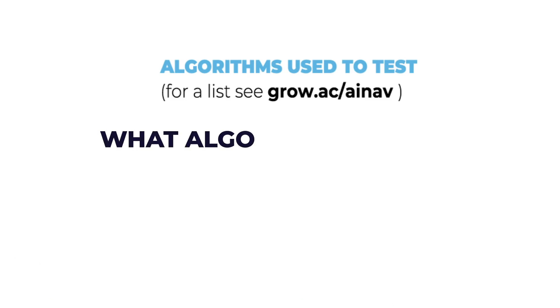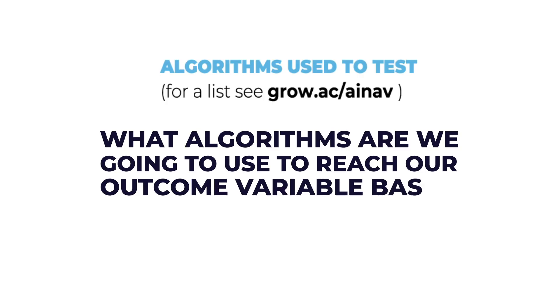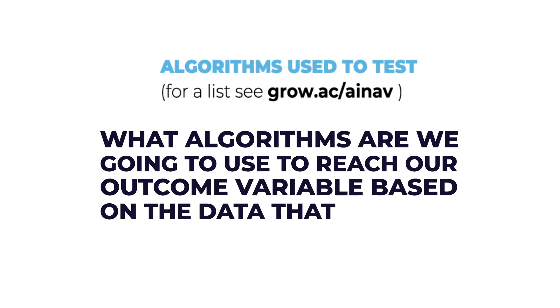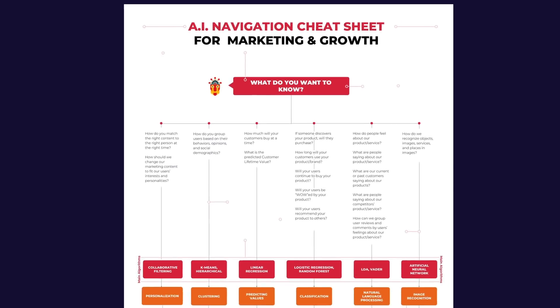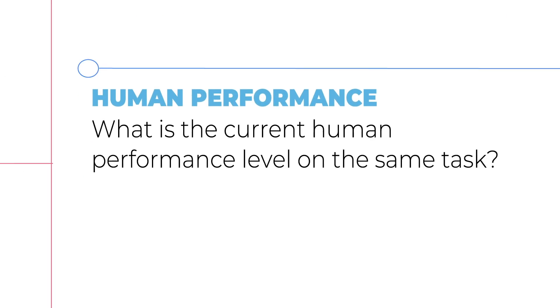Next up is about what tools and algorithms we're going to use to try to answer the project question. What algorithms are we going to use to reach our outcome variable based on the data that we have? It can sometimes be hard to navigate the wide and complex range of algorithms available for AI projects, which is why we created the AI Cheat Sheet, which I mentioned before.